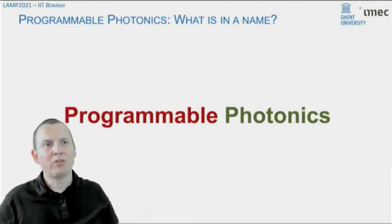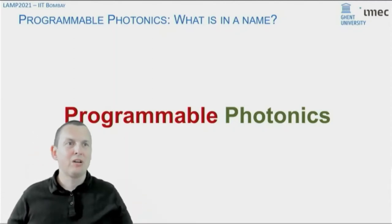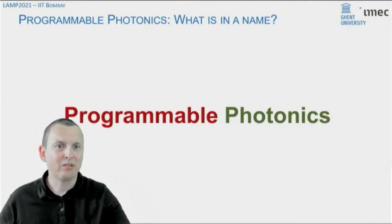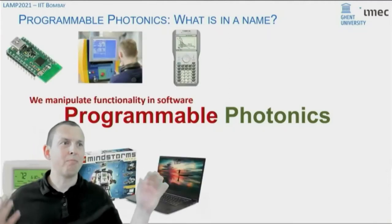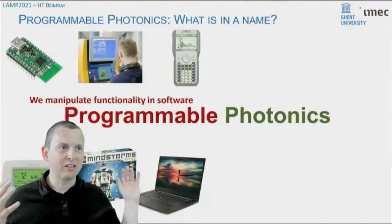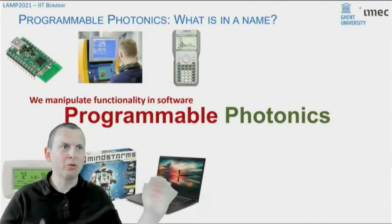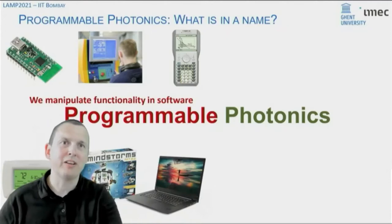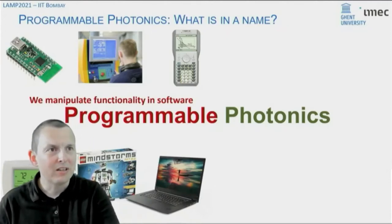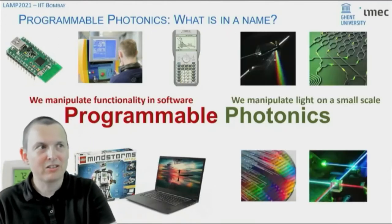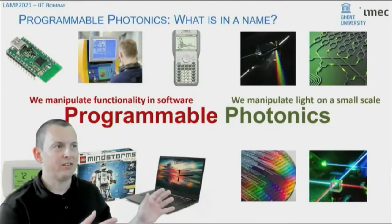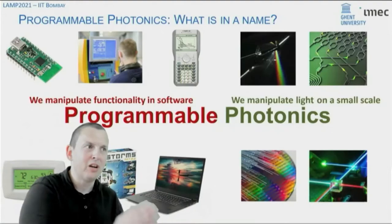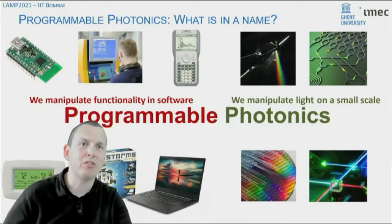If we think about things that are programmable, we think about stuff that can be reconfigured in software. There are plenty of examples in the world of things that are programmable, going from computers all the way to toys and all kinds of stuff in the background of your life nowadays. If you think about photonics, you think about manipulating light. Typically, to differentiate photonics from optics, in photonics we manipulate light on a small scale.